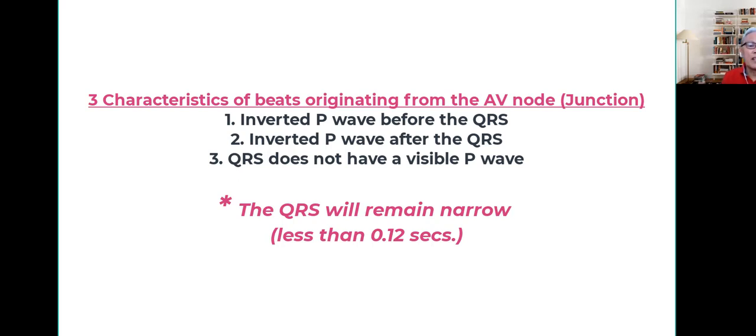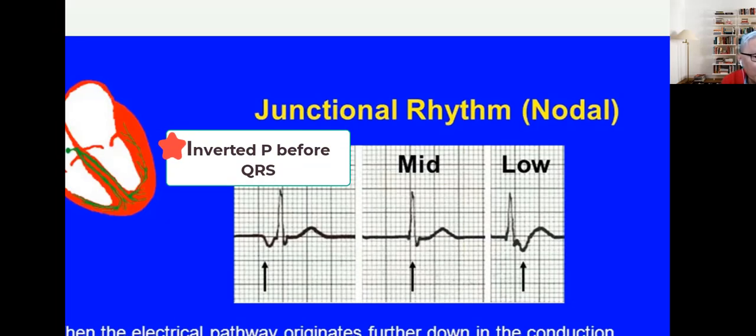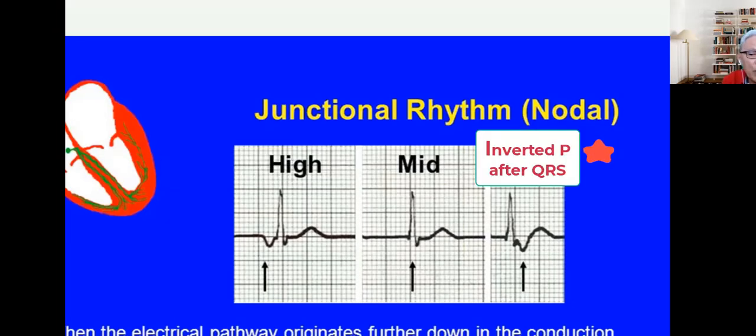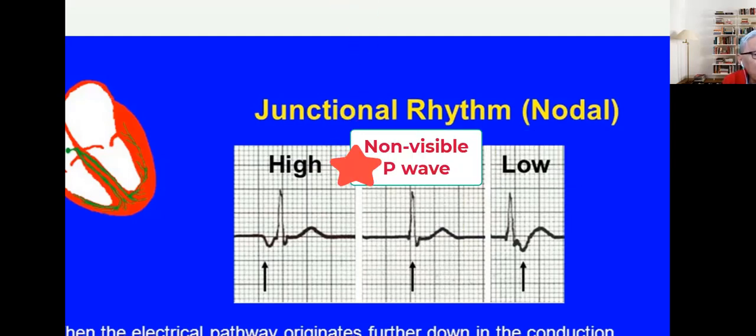These are the reasons then that I assume that these beats are coming from the AV node. P wave before the QRS, inverted P wave before the QRS, inverted P wave after the QRS, or a QRS that does not have a visible P wave.